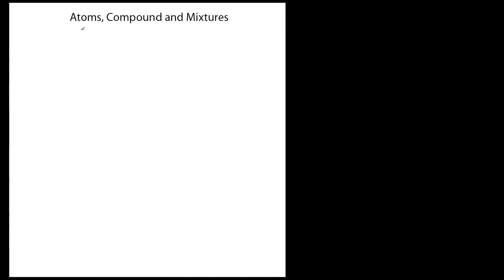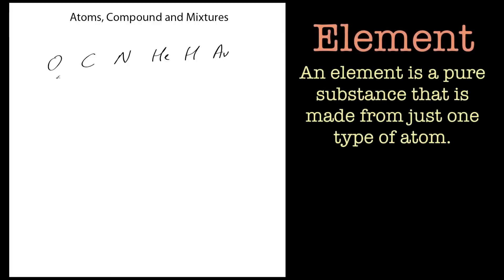In this tutorial we're going to go over atoms, compounds, and mixtures and briefly explain what each one is. You're probably aware of elements in the periodic table — things like oxygen, carbon, nitrogen, helium, hydrogen, and less familiar ones like the symbol for gold. These are all elements, and what an element is is a collection of identical atoms.